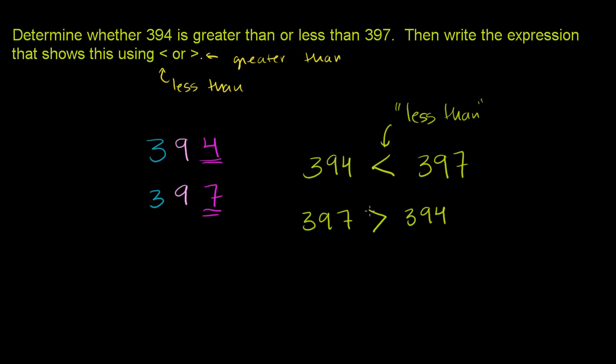Or the side that has the bigger side of this symbol right here. This point is the smaller side. This out here is the bigger side. That's where you put the larger number. Greater than, less than.